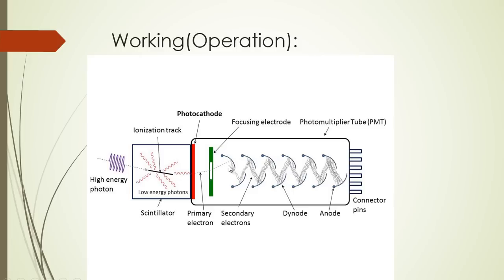So for example, the first dynode might be at 100 volts relative to the photocathode, then 200 volts, 300, 400 — each at a potential difference of 100 volts from the previous one. When the photoelectron ejected from the photocathode — the primary electron — falls on a dynode surface, it liberates several secondary electrons. This number is typically somewhere from 4 to 8.